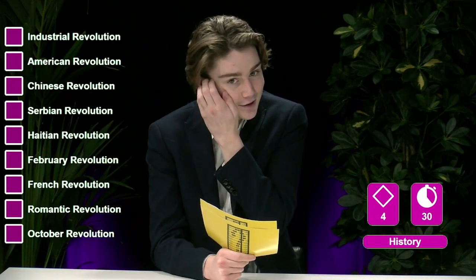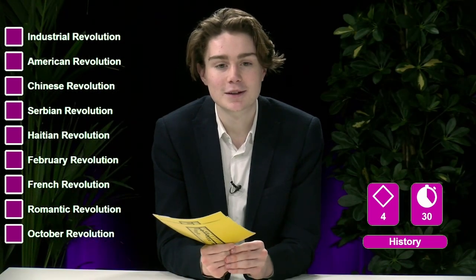The Paris Commune was a revolutionary socialist government that controlled Paris from March 18th to May 28th, 1871. It was established by radicalized defectors from the French National Guard, which had been mobilized to defend Paris in the Franco-Prussian War. It was also the revolution to conclude the age of revolution, a period from the late 18th to the mid 19th century, during which a number of significant revolutionary movements occurred in most of Europe and the Americas. Revolutions quite literally shaped Europe and the world into the way we know it nowadays. Here are the nine historically significant revolutions: the industrial revolution, the American revolution, the Chinese revolution, the Serbian revolution, the Haitian revolution, the February revolution, the French revolution, the Romantic revolution, and the October revolution.